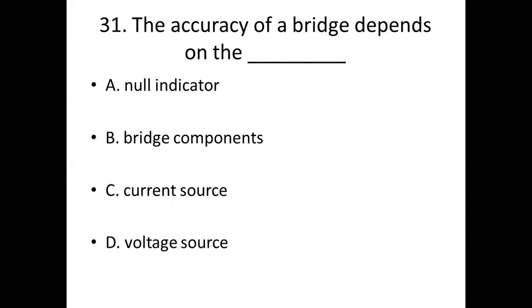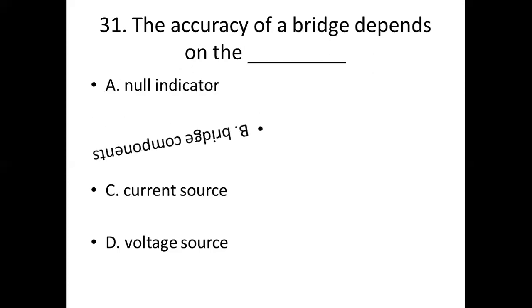31st bit. The accuracy of a bridge depends on the dash. Option A: null inductor. Option B: bridge components. Option C: current source. Option D: voltage source. Answer: Option B, bridge components.